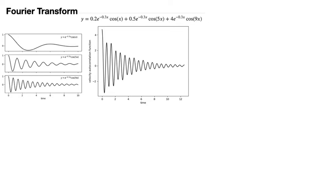Notice that the terms in this expression all contain a coefficient — the 0.2, 0.5 and the 4 — which is multiplied by an exponential decay, e to the minus 0.3 x, which is in turn multiplied by a periodic function. The only difference, other than the coefficient between these three functions, is the period of the cosine function.